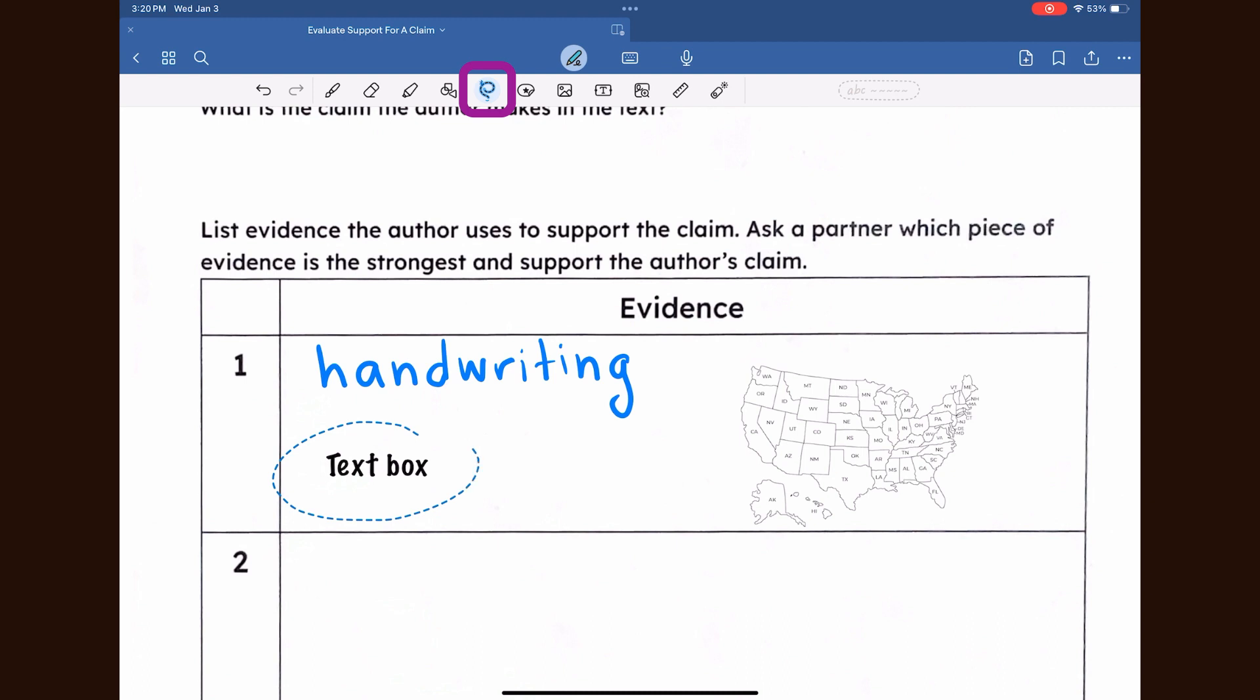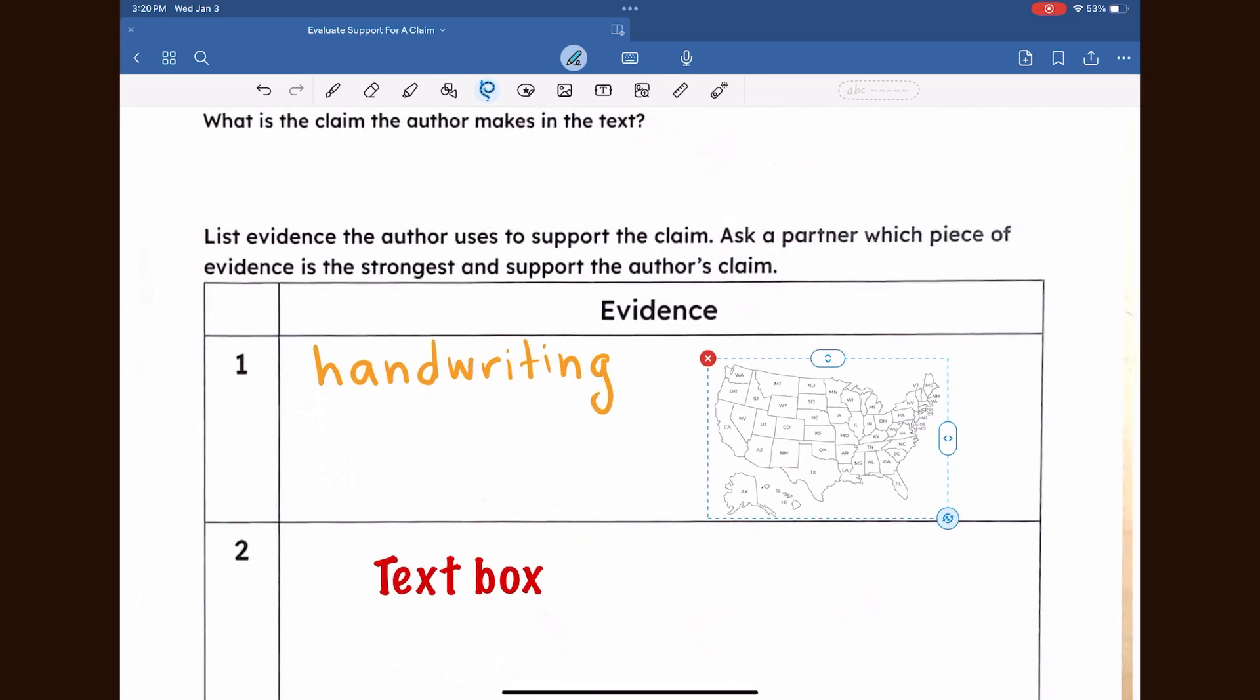To use the lasso tool, start by selecting it in the handwriting toolbar, then select objects by drawing a shape that encloses all the desired items on the page. You can select handwriting, highlighting, text boxes, and images. Tap on the selected objects to see a pop-up menu with options including move, copy and paste, resize and rotate, and convert handwriting to text.